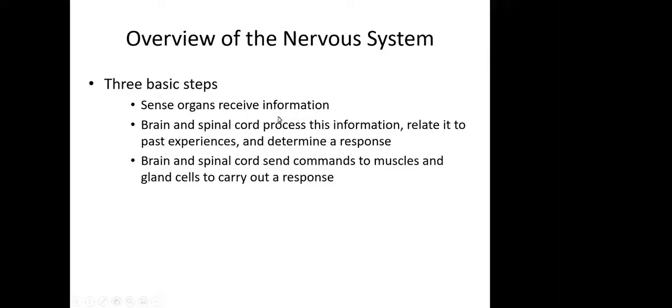An overview of the nervous system: We have sensory organs that receive information, and then we have transmission of that information to the spinal cord and brain. The brain processes the information, integrates it.